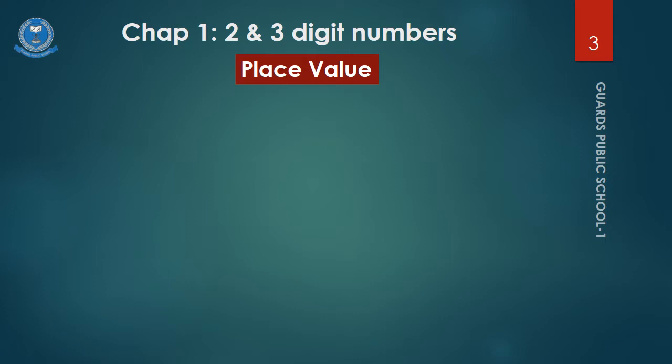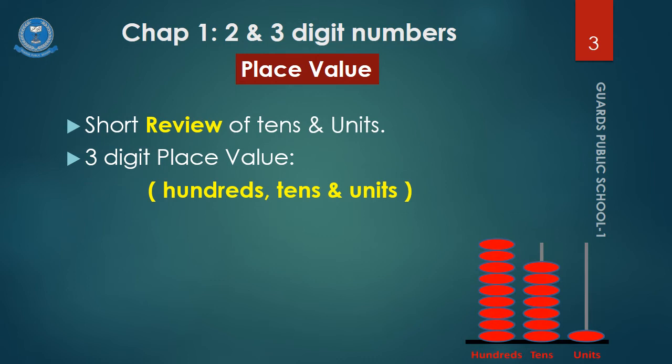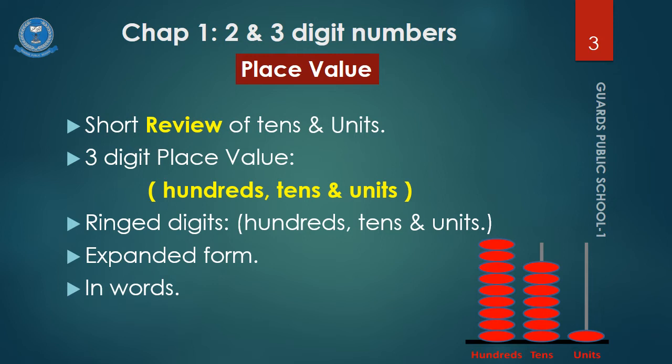Before starting our lecture, let's see what we will discuss in today's presentation. First, we take a review of tens and units, which is very important. Second, we will talk about three digit place value, that are hundreds, tens and units. Third, we will do an activity of ring digit numbers for hundreds, tens and units, then expanded form, and last but not the least, in words, which you all already learned in your previous class.